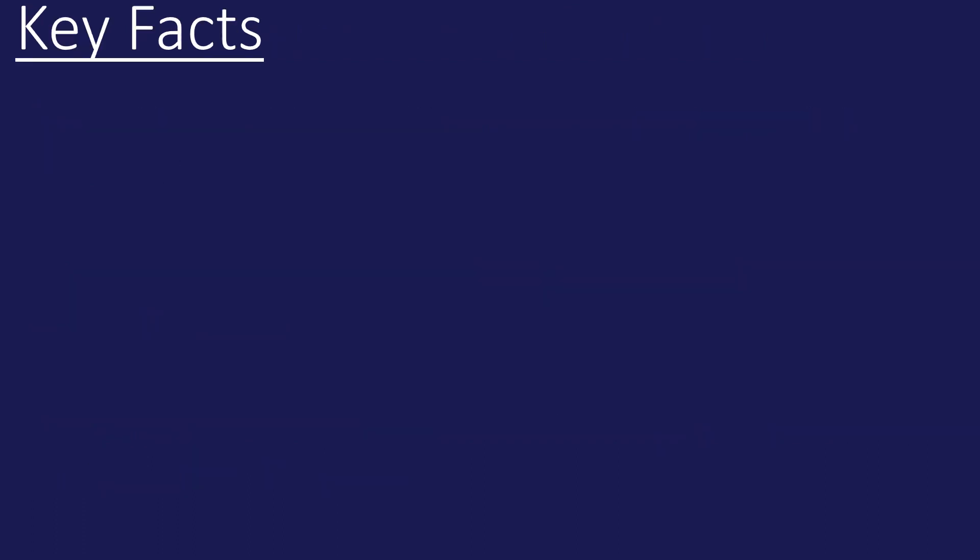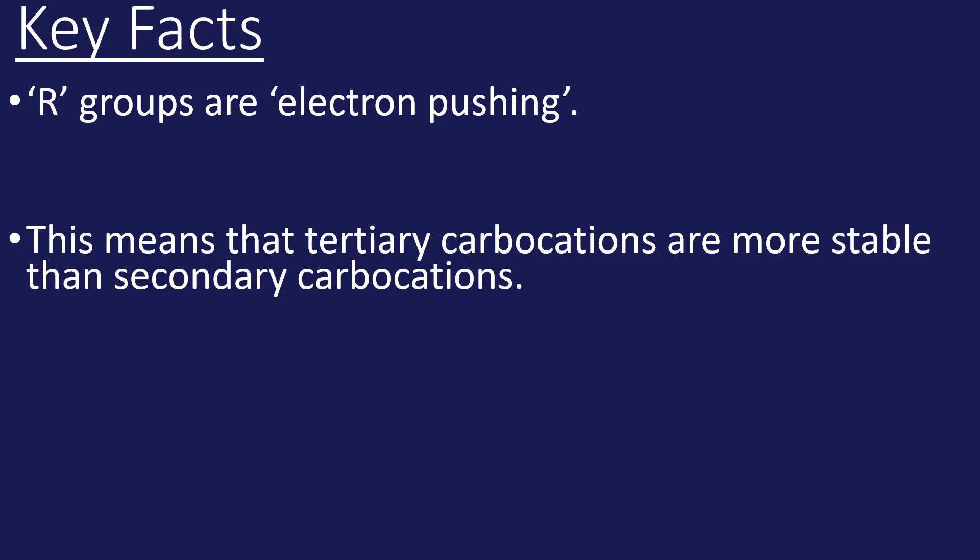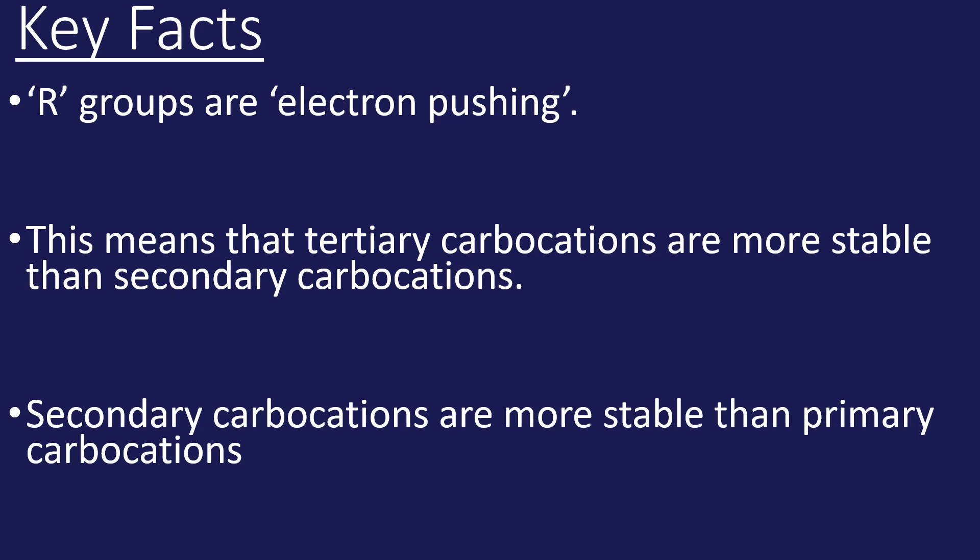Key facts: an R group is electron pushing. This means tertiary carbocations are more stable than secondary carbocations because a tertiary carbocation has three R groups that are electron pushing helping to stabilize the positive charge. Using the same logic, a secondary carbocation is more stable than a primary because it has two electron pushing R groups.